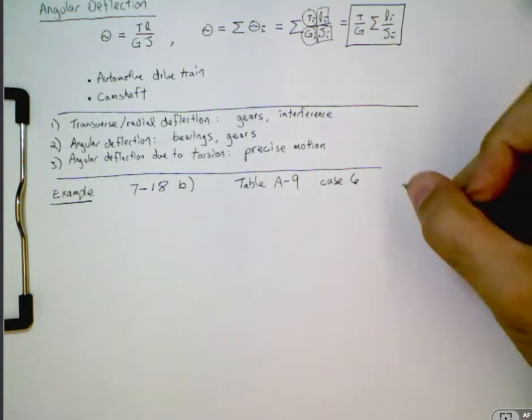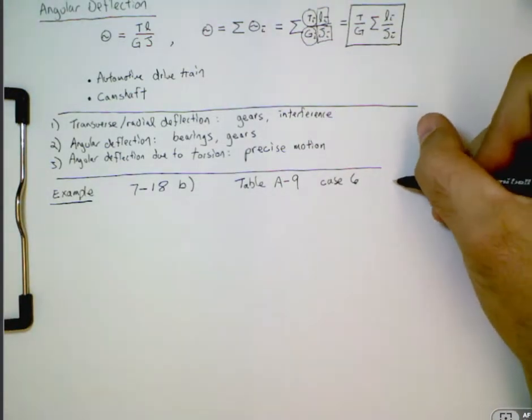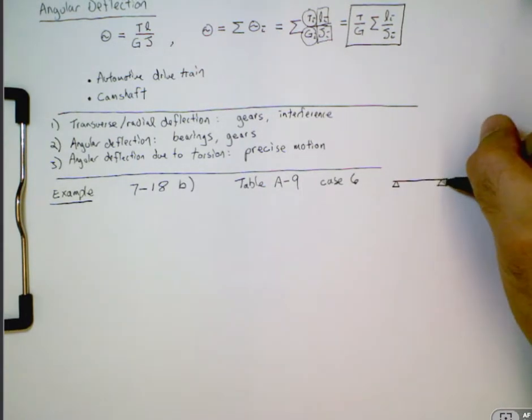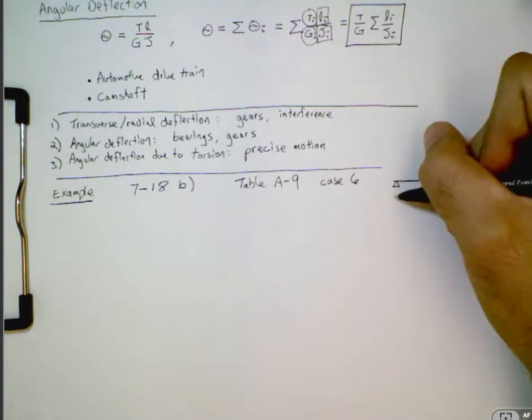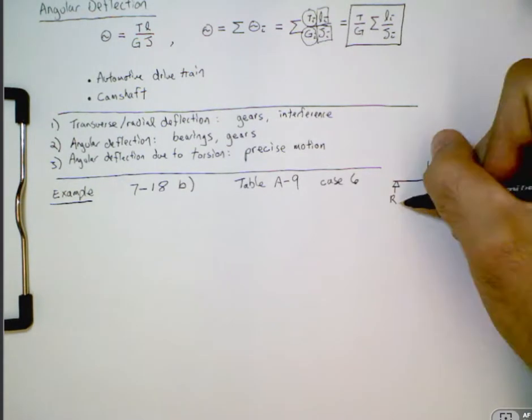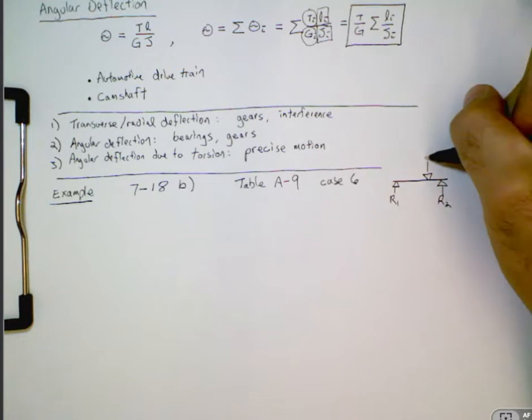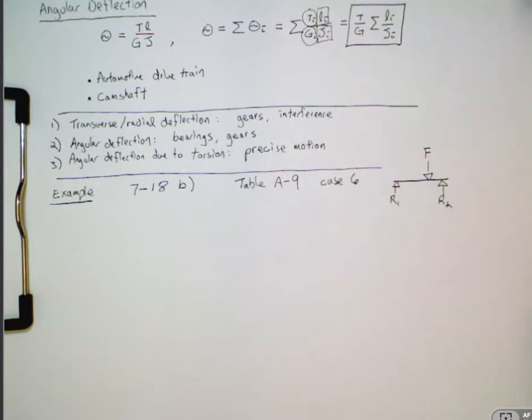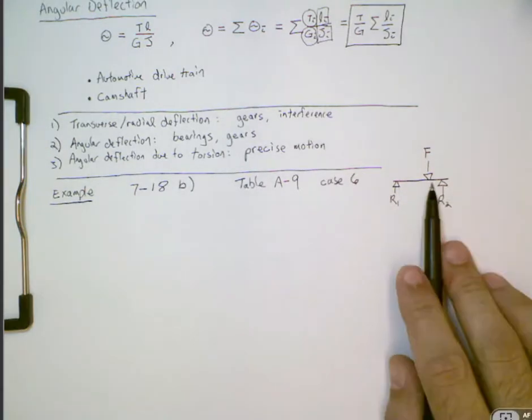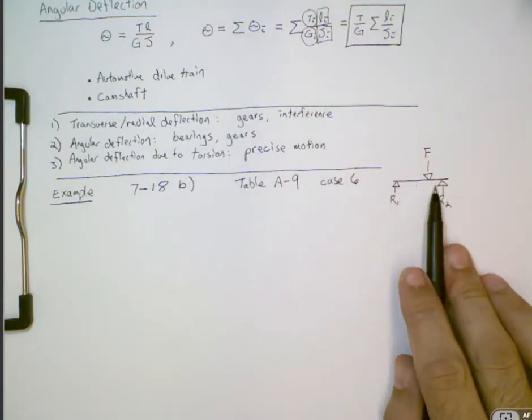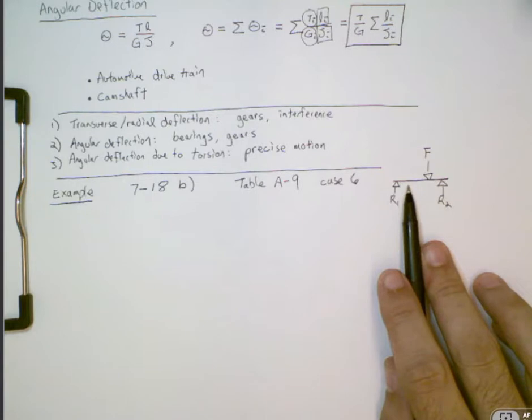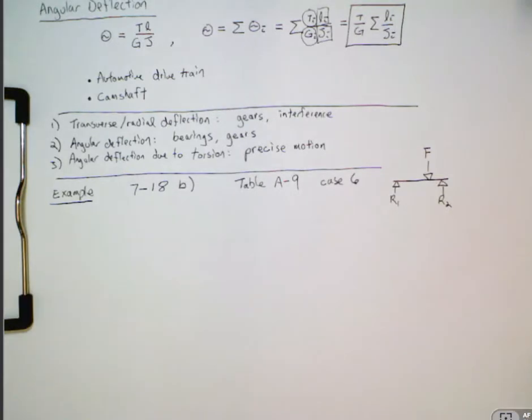And it's a simply loaded beam. So if we have two reaction forces and then a transverse or radial force somewhere in the middle of the beam, and it's not in the middle in the exact center. It's just at some arbitrary location in the middle of the beam. So I encourage you to look that case up and make sure you get all the terminology for that.